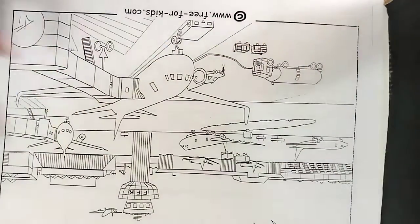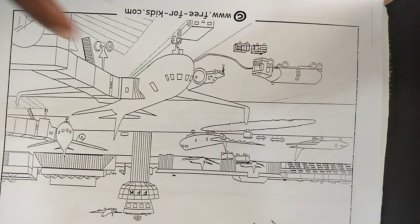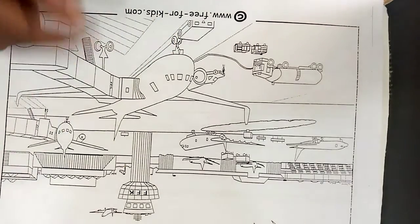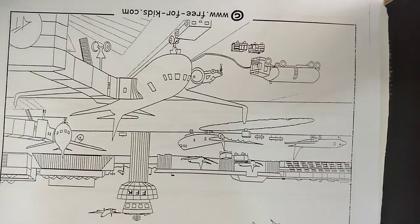So what can you see on this picture? I can see different planes of different sizes. Some are big, some are small.